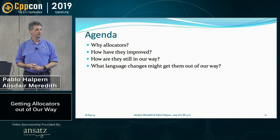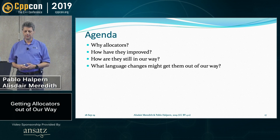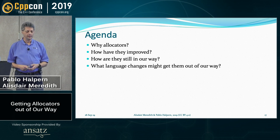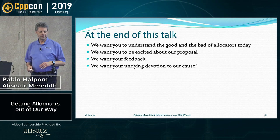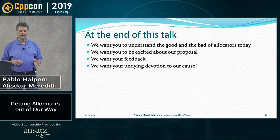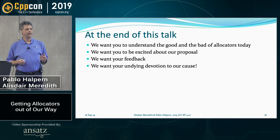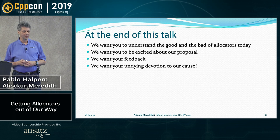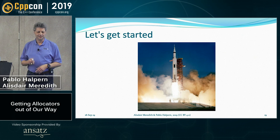A little outline of our talk: we're going to start by talking about why we need allocators in the first place, how they've improved over the years, why they are still in our way, and the language changes that we might make to get them out of our way. At the end of this talk, I hope you'll understand the good and bad of allocators today, but we want you to get really excited about our proposal. We do need feedback — the proposal is in very early stages, and we want your undying devotion to this cause.